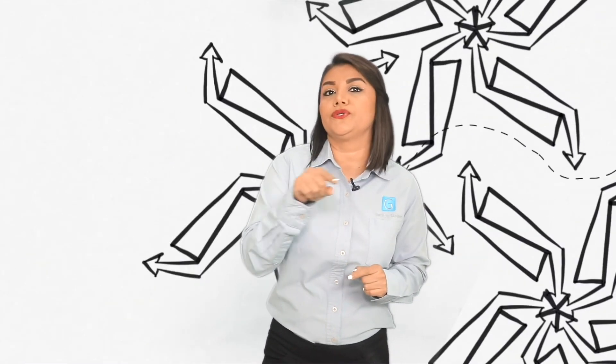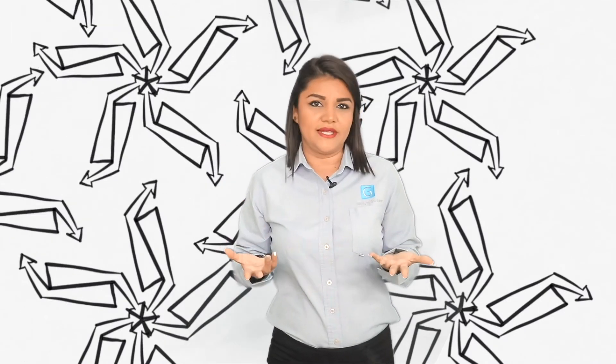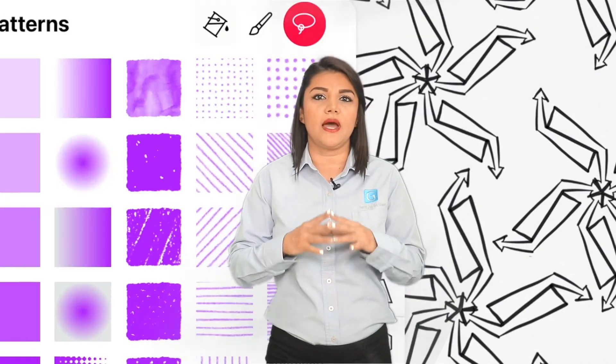Rotation is spinning the pattern around a point. A rotation or turn occurs when an object is moved in a circular fashion around a central point. A good example of a rotation is one wing of a pinwheel, which turns around the central point. Rotations always have a center and an angle of rotation.